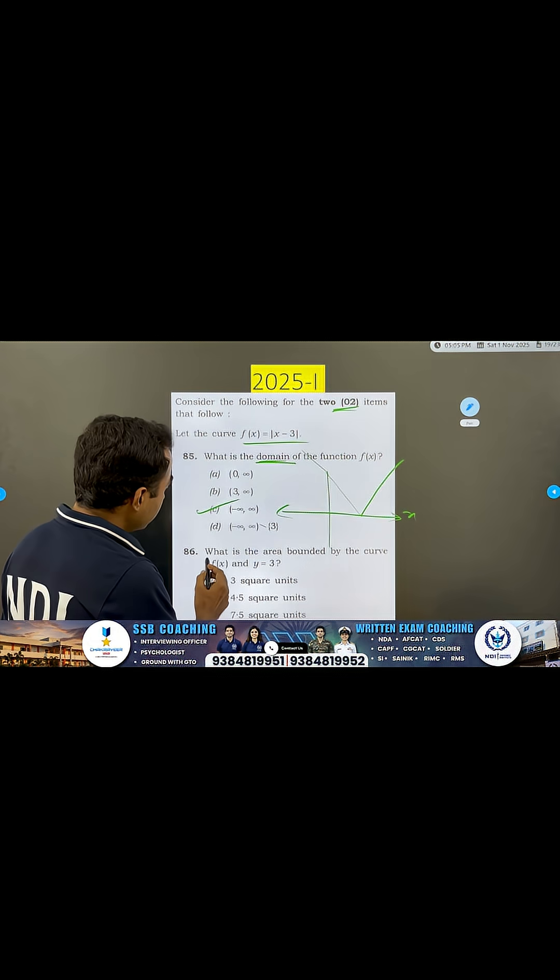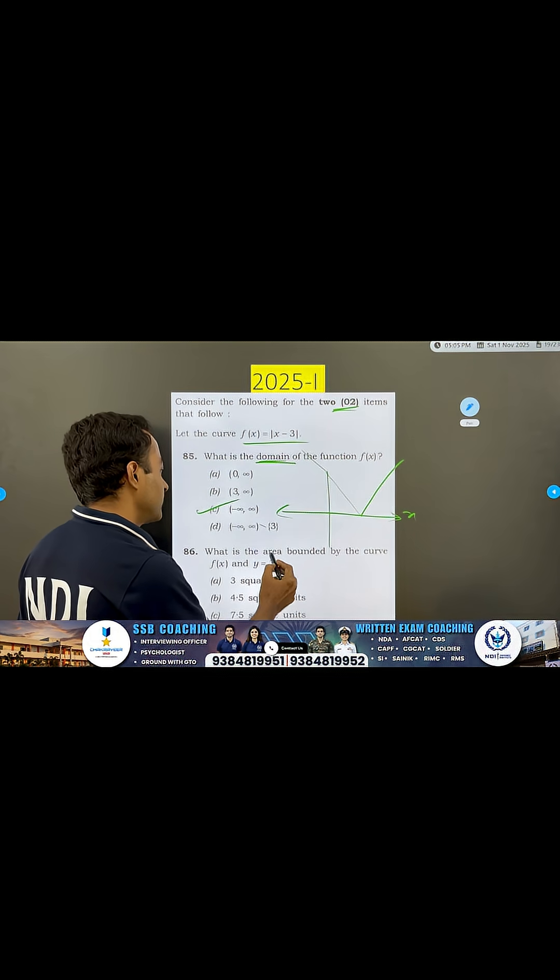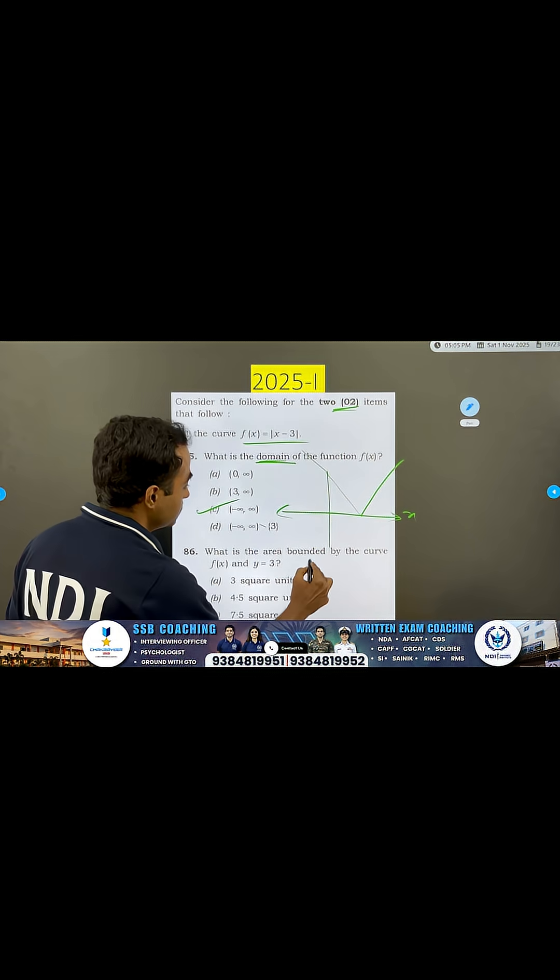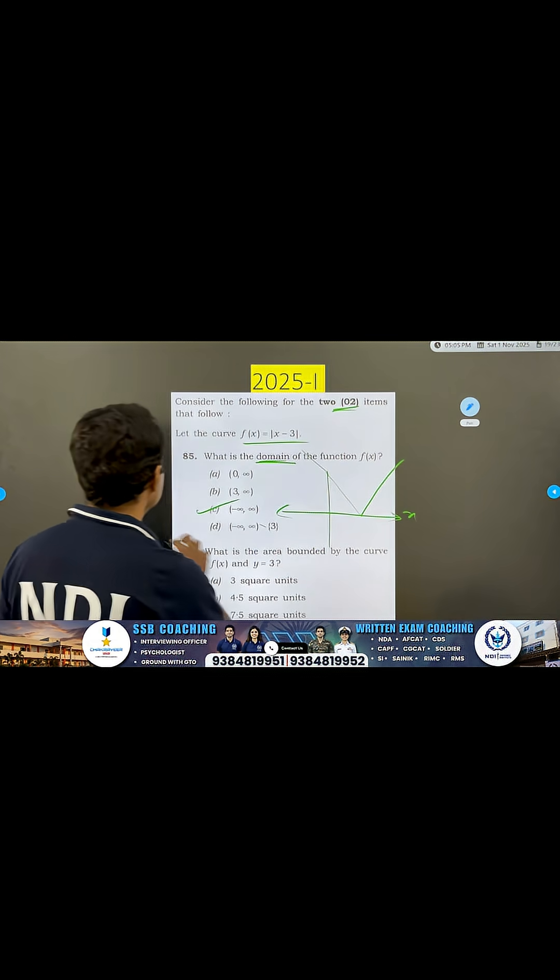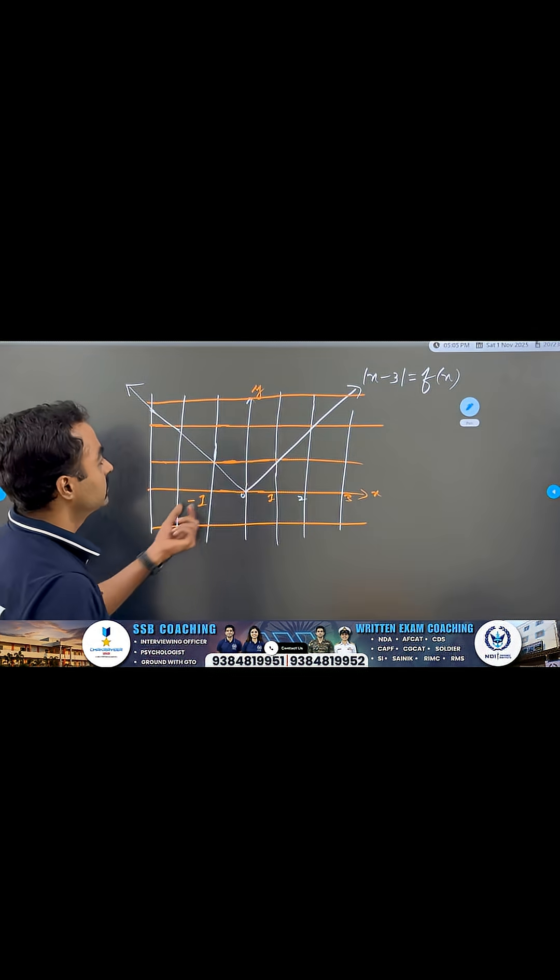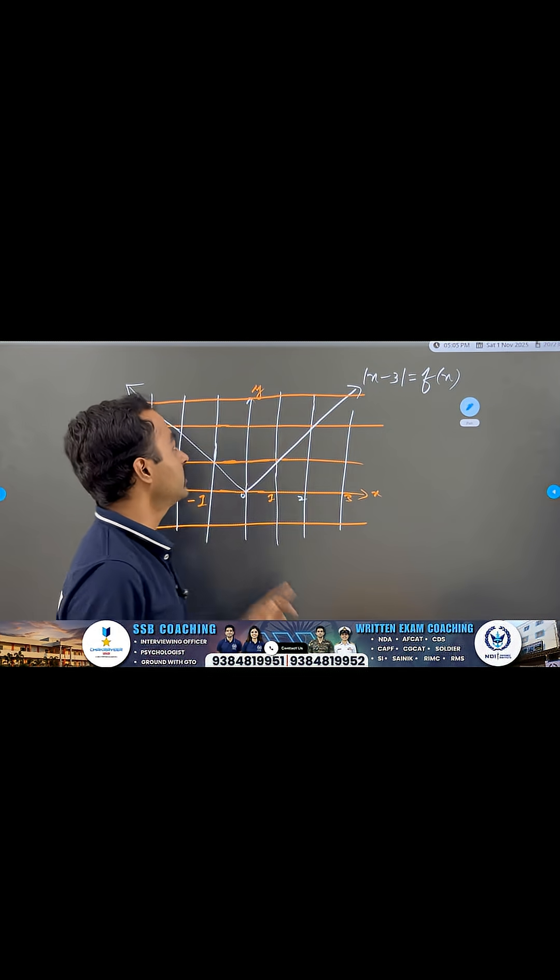Now, we need to solve this second question. What is the area bounded by this curve? What is the curve? This curve and Y is equal to 3. This is the second question they are asking us to solve. To solve this one, you will just see this graph of this function in a grid.